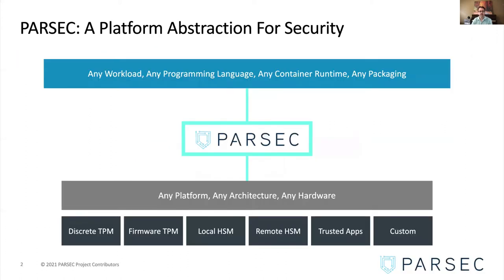PARSEC is a security project that provides an abstraction layer between root of trust and applications. This abstraction layer provides a set of APIs for security functions such as key management or cryptographic operations, and provides this API to the application layer without creating a strong dependency on the security primitives in the system.